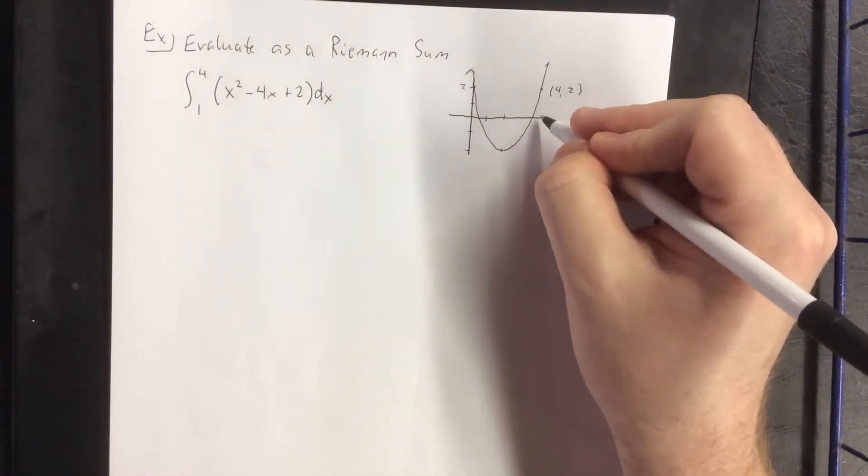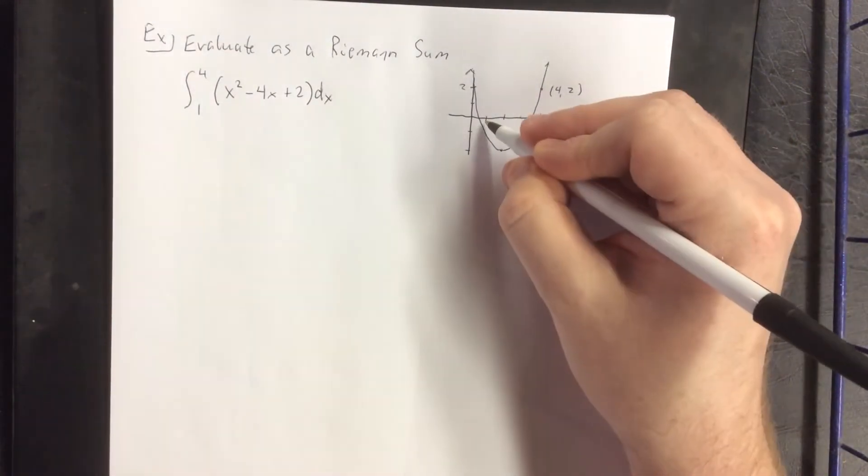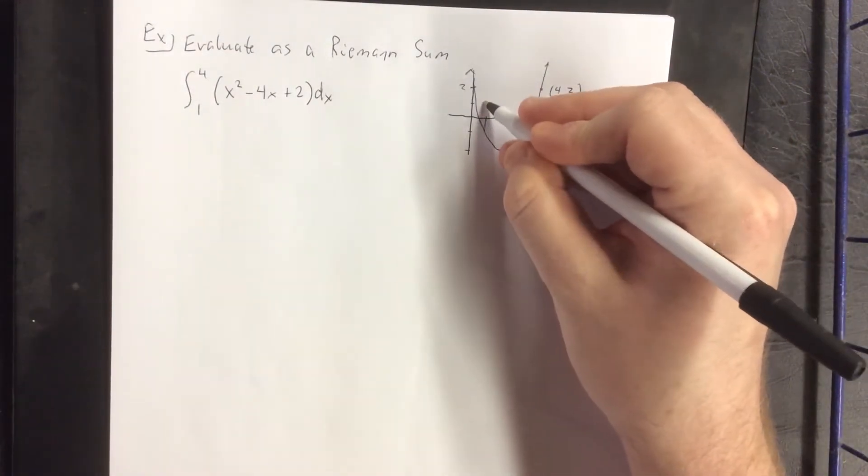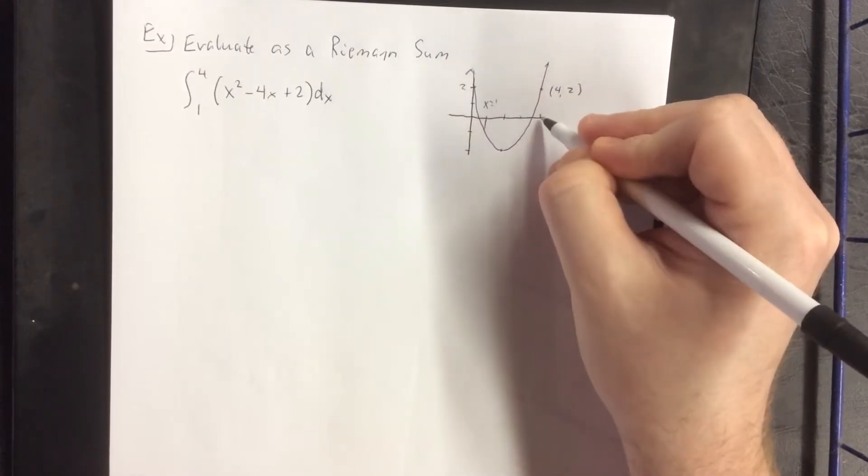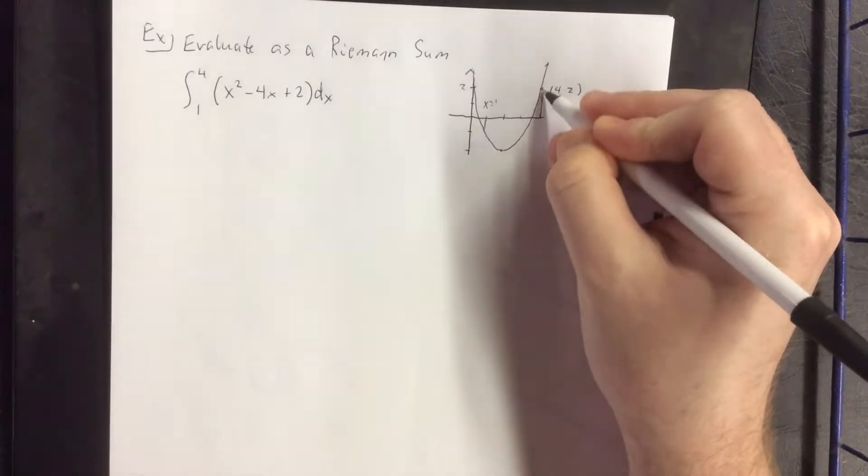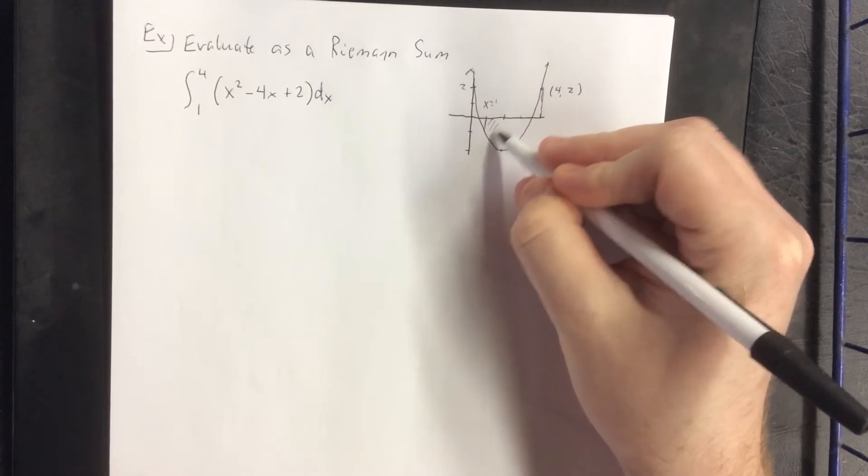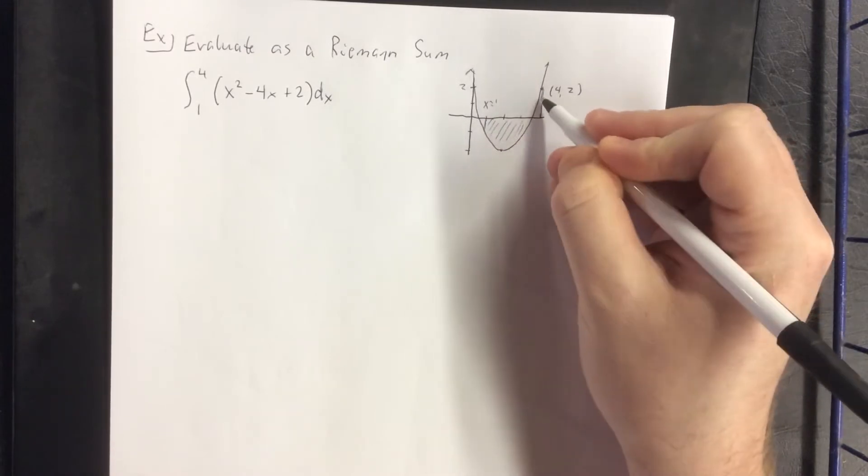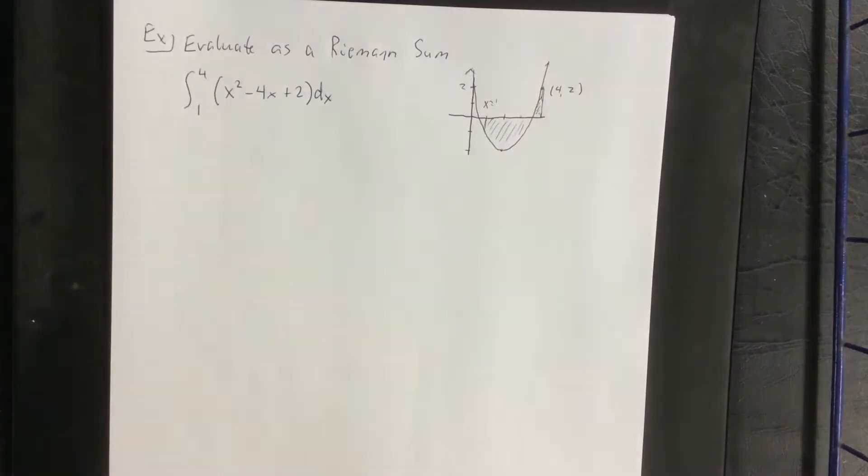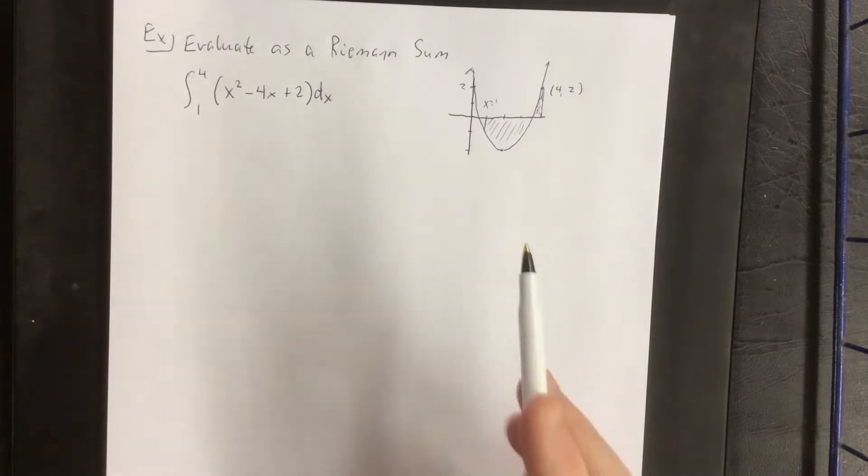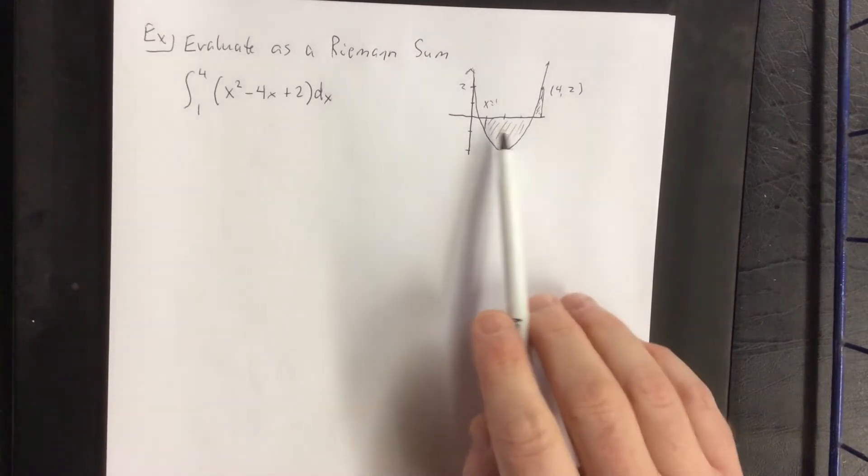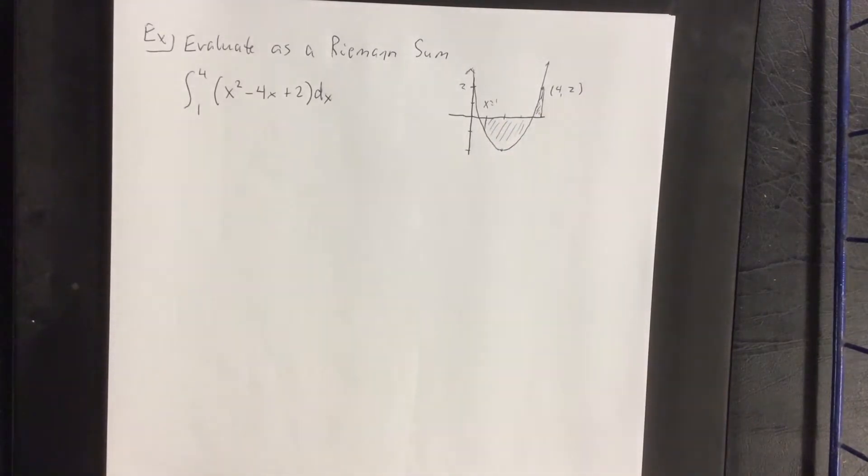So the area in question is going to be the following area. We're going from x equals 1 to x equals 4. The area in question will be this rather large negative region followed by this little positive region. Now just based off of the shapes that I see here, I'm predicting that we're probably going to wind up with a negative answer since it appears as though there's a lot more negative area than there is positive area.